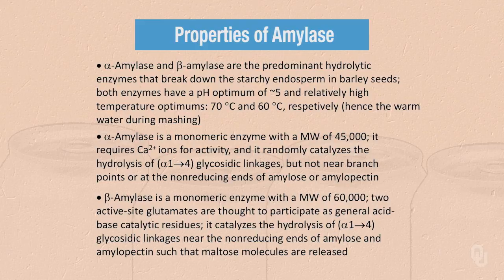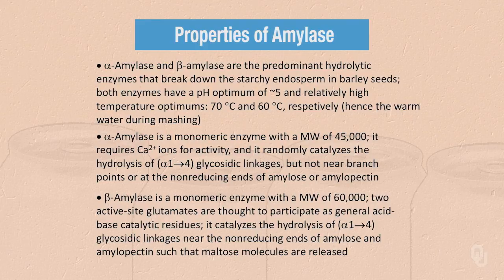The two main enzymes are alpha-amylase and beta-amylase. They break down the starchy endosperm in barley seeds and make the stored carbohydrate into a form that yeast can use. Both enzymes have a pH optimum of about 5 and relatively high temperature optima — 70 degrees for alpha-amylase and 60 degrees for beta-amylase — which explains why mashing uses warm water. Alpha-amylase is a monomeric enzyme with a molecular weight of 45,000. It requires calcium ions for activity and randomly catalyzes hydrolysis of alpha-1,4 glycosidic linkages, but not near branch points or at non-reducing ends.